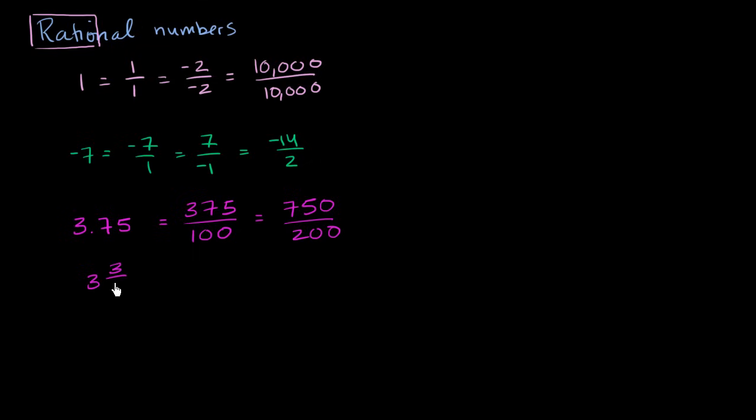So let me write it here. 3 and 3 fourths, which is the same thing as 15 over 4. 4 times 3 is 12, plus 3 is 15. So you could write this. This is the same thing as 15 over 4. Or we could write this as negative 30 over negative 8. I just multiplied the numerator and the denominator here by negative 2. But just to be clear, this is clearly rational. I'm giving you multiple examples of how this can be represented as the ratio of two integers.